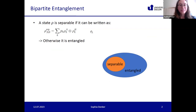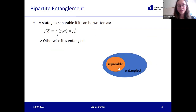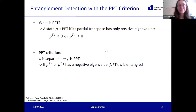Any quantum state that can be written as a convex combination of product states is called separable, and all states that we can't write in this form are called entangled. In the state space, the orange area denotes the separable states and the other states are entangled. One very useful criterion to detect entanglement is the PPT criterion.